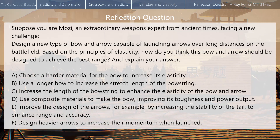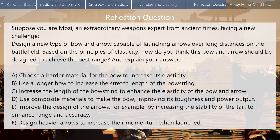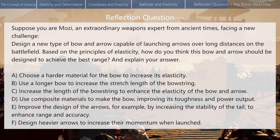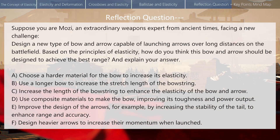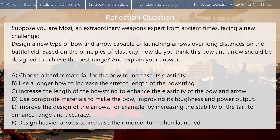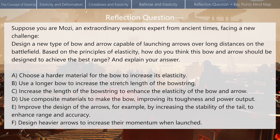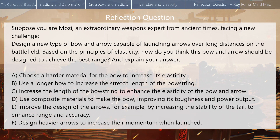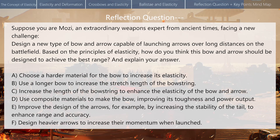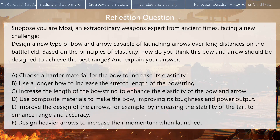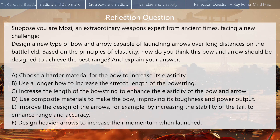A. Choose a harder material for the bow to increase its elasticity. B. Use a longer bow to increase the stretch length of the bowstring. C. Increase the length of the bowstring to enhance the elasticity of the bow and arrow. D. Use composite materials to make the bow, improving its toughness and power output. E. Improve the design of the arrows, for example by increasing the stability of the tail, to enhance range and accuracy. F. Design heavier arrows to increase their momentum when launched.